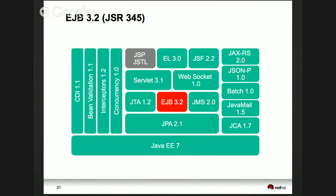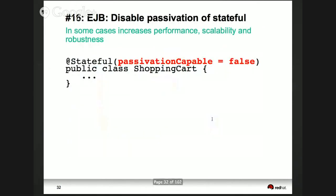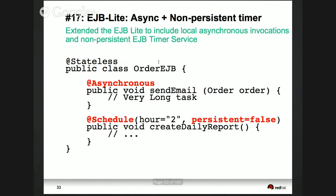EJB 3.2 is a very minor release. For performance optimization, you may not want to passivate your stateful beans all the time — there's a tiny annotation for that. Also, asynchronous and non-persistent timers are added to the web profile.